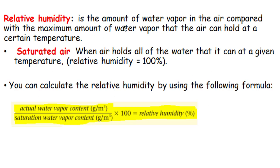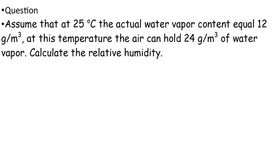Relative humidity is the amount of water vapor in the air compared with the maximum amount of water vapor that the air can hold at a certain temperature. Saturated air is when the air holds all the water it can at a given temperature. You can calculate relative humidity using the formula: actual water vapor content divided by saturated water vapor content, times 100.